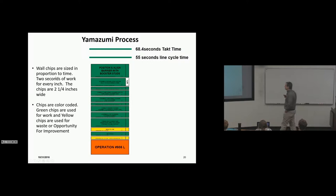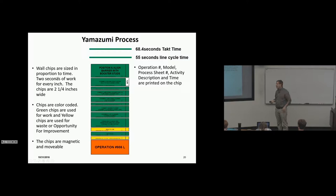Chips are color-coded. Green chips are used for work and yellow chips are used for waste or opportunity for improvement. Chips are magnetic and movable. So if you have this magnetic wall and you have all these chips on the jobs, let's say 12 jobs, and you can see how they relate to the line speed, you can start analyzing where these elements of work can go. Of course, considering sequence. So you understand what your efficiency or utilization is of a certain area.